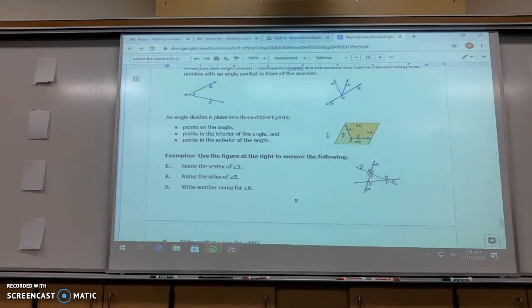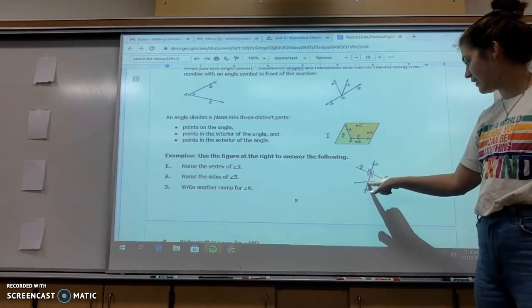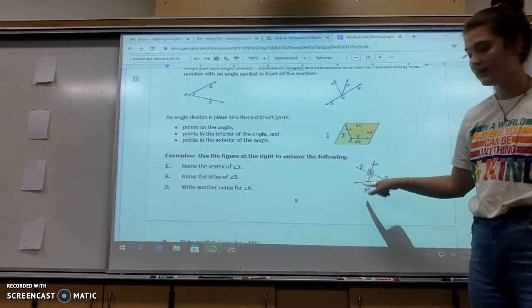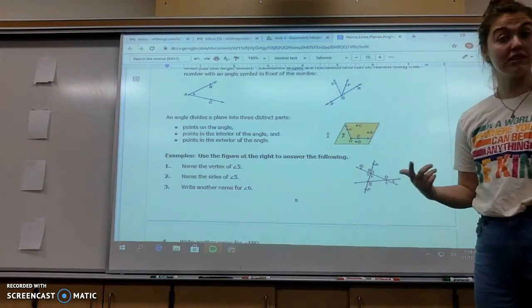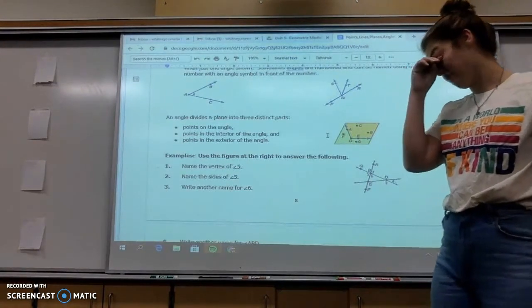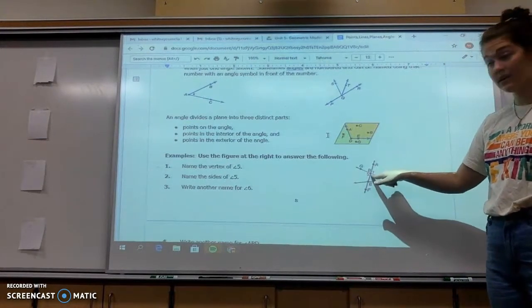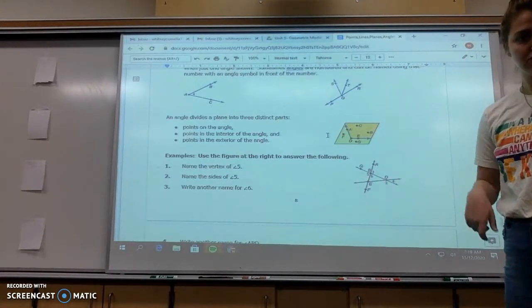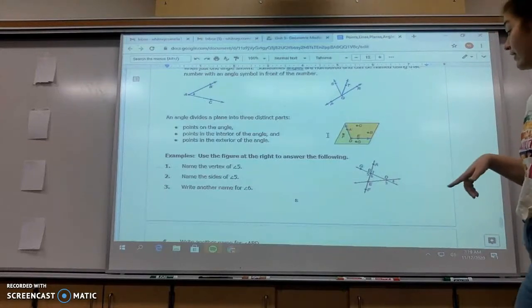Name the vertex of angle five. So first thing I'm going to do is come over here to angle five and see that this right here, our angle is EBG for angle five, and the vertex of that is B, point B. Name the sides of angle five. The sides are EB and BG for a straight core, right?